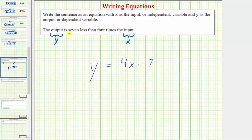So our equation for the output is seven less than four times the input is y equals four x minus seven.